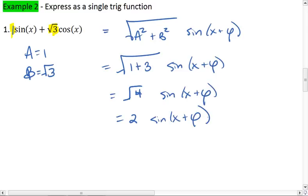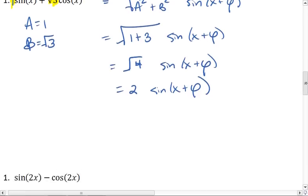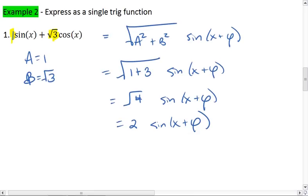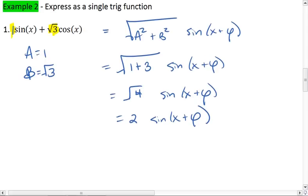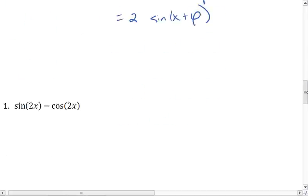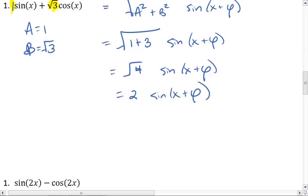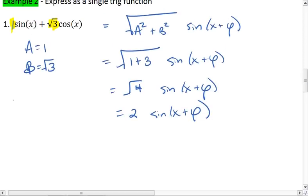All right, the trickier part is figuring out this sine of x plus phi. We realize that for this one, let's look down here. Actually, I'm going to write off to the side here. Square root of A squared plus B squared, we now know, is the square root of 4, which equals 2.